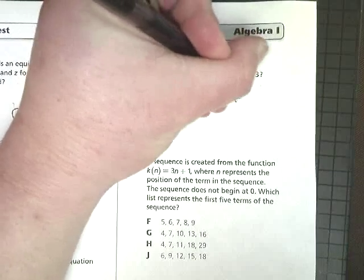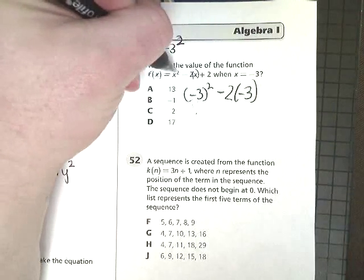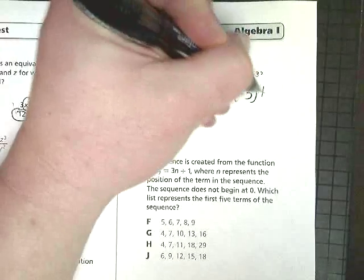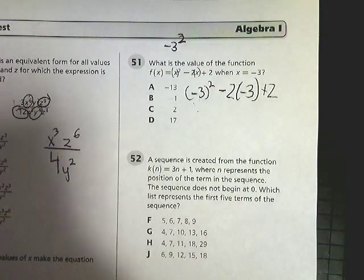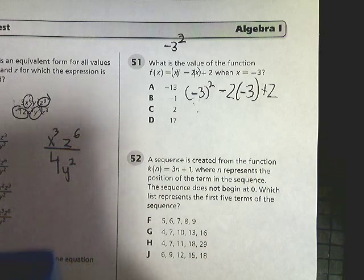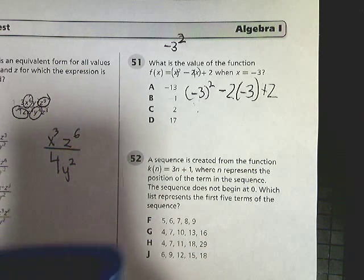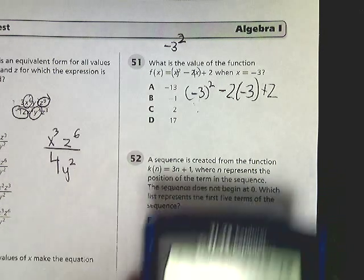So just on the safe side, I always put parentheses around the x's and then just plug the values in. So I get negative 3 squared minus 2 times negative 3 plus 2 gives me 17.